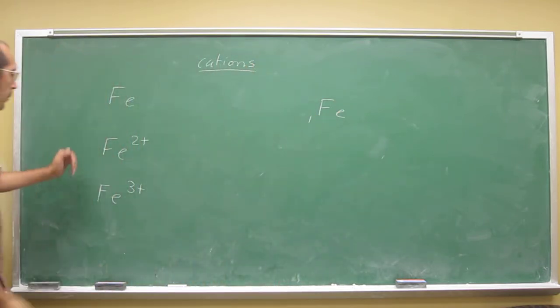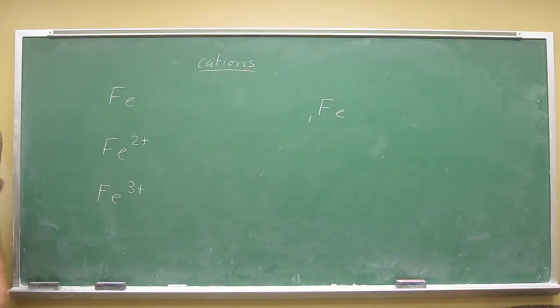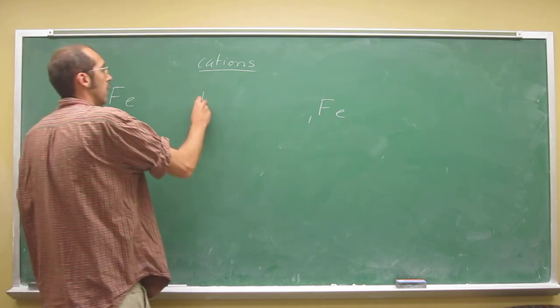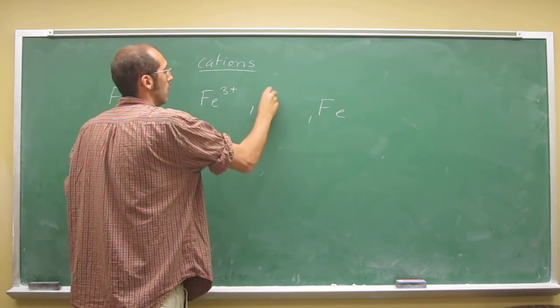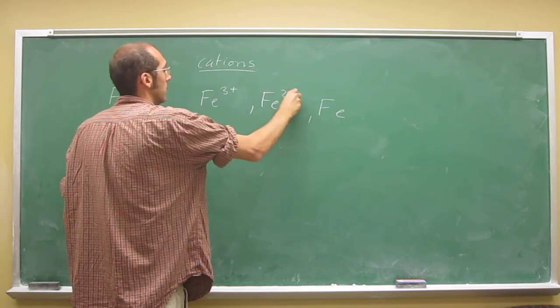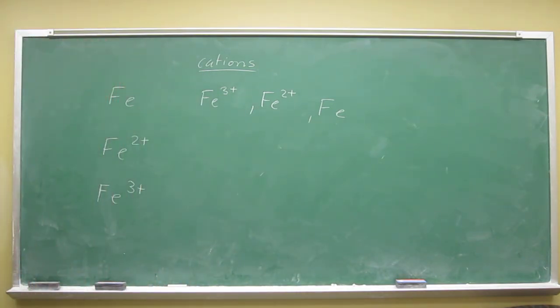So how do we determine which one is bigger here? Well, it's the same principle. The nuclear charge has more of an effect on Fe3+, because it has one less electron than Fe2+. So in this case, Fe3+ is going to be the smallest of these particles.